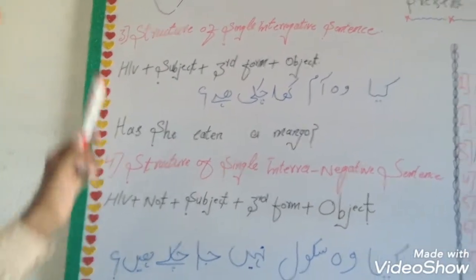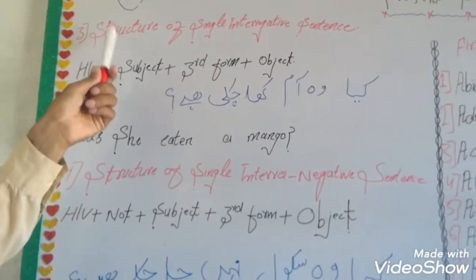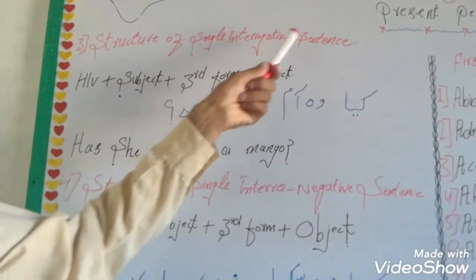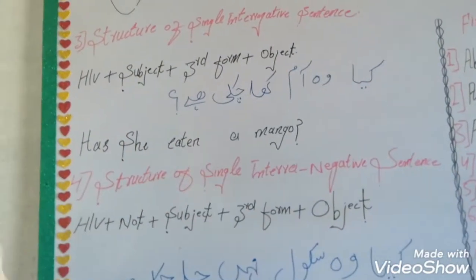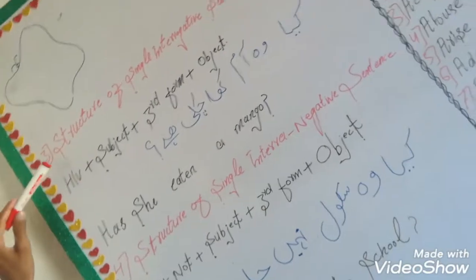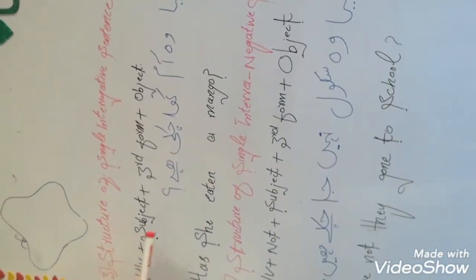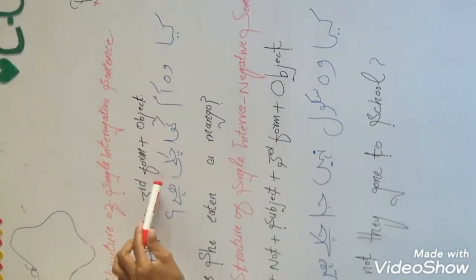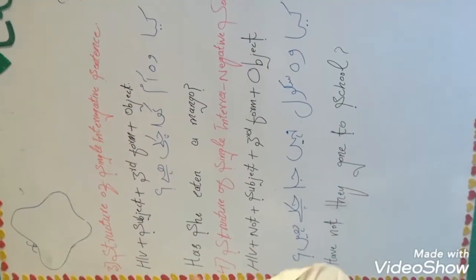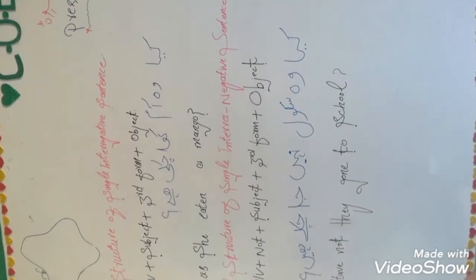The structure number third is the structure of single interrogative sentence. The formula is: first in this structure, helping verb comes first, then subject, then third form of verb, then object.